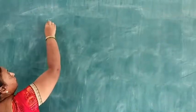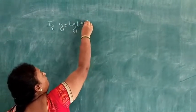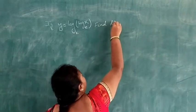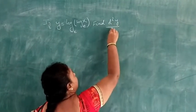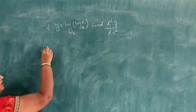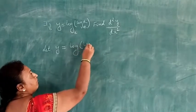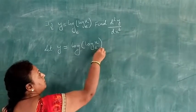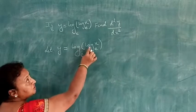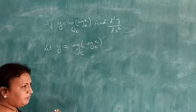Next problem: if y equals log of log x to the base e, find d squared y by dx squared. This is a composite function — the chain rule applies — with the outer function being log and the inner function also being log x.